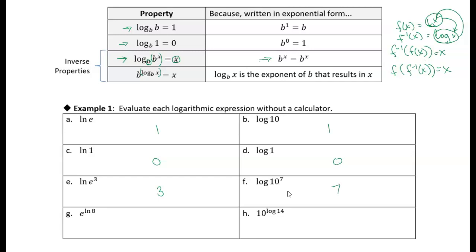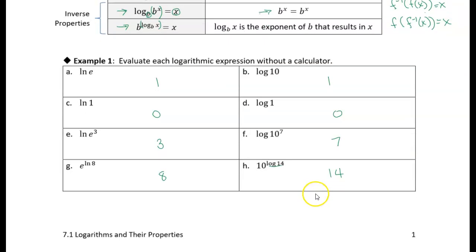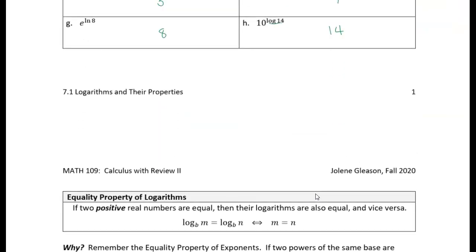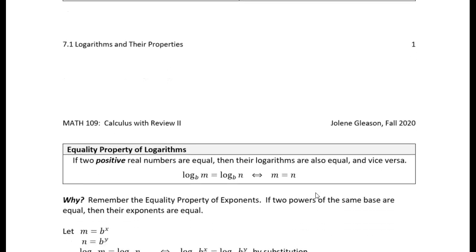These last two use the final inverse property. E to the natural log of 8: the natural log of 8 is the exponent on E that gives you 8, so if we raise E to that power we get 8. Similarly, 10 to the log of 14: the log of 14 asks what power we raise 10 to in order to get 14 — we don't need to know the exact value, but raising 10 to that power gives us 14. That's example one. In the next video we'll talk about the equality property of logarithms.